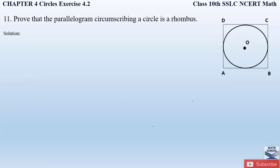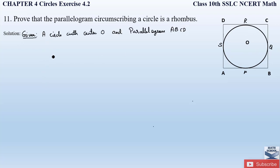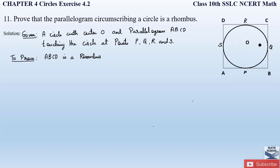After drawing the figure, we write what is given: a circle with center O and a parallelogram ABCD touching the circle at points P, Q, R and S — these are the points where the circle touches the parallelogram. What we have to prove is that parallelogram ABCD is a rhombus, meaning all four sides are equal: AB = BC = CD = AD.